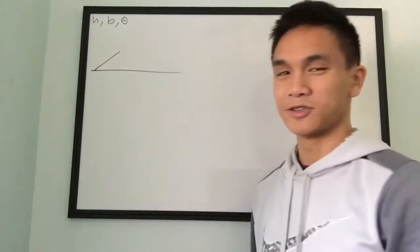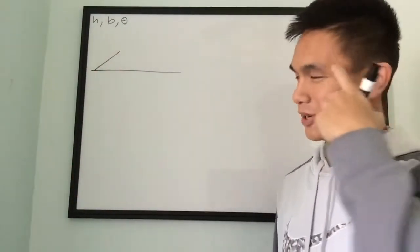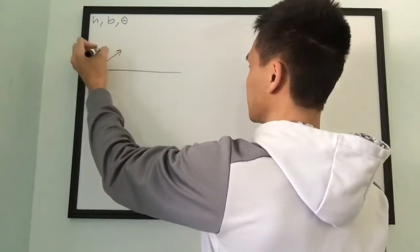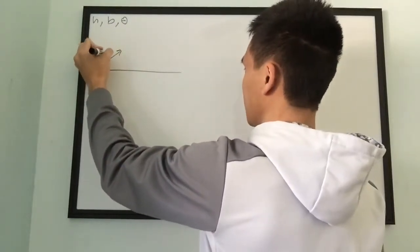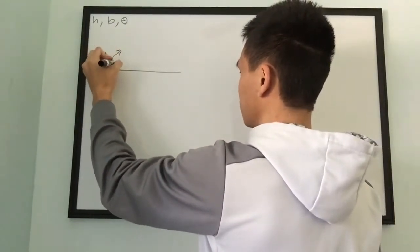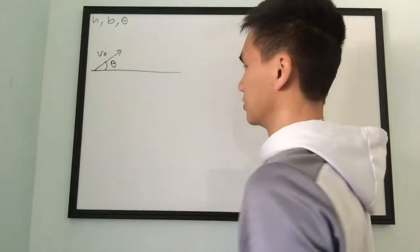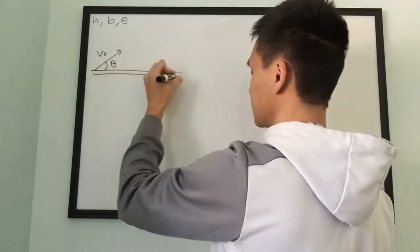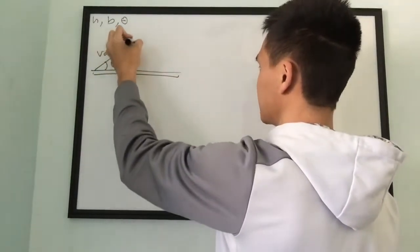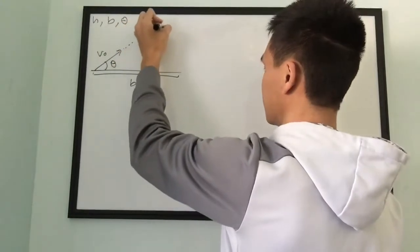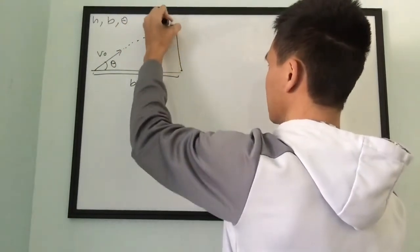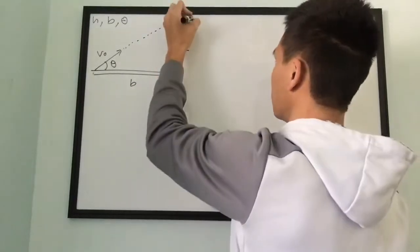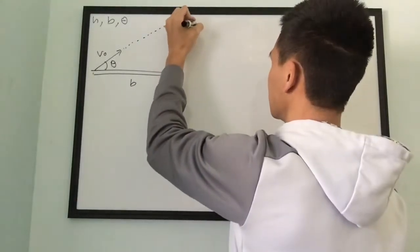It's a 2D motion problem with a projectile. It's going to be traveling at some speed v-naught with some angle theta with respect to the horizontal. It travels a horizontal distance b until it hits some tree at some height h. The problem wants to find out what is tangent of theta.